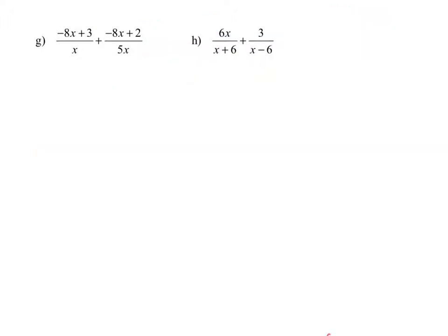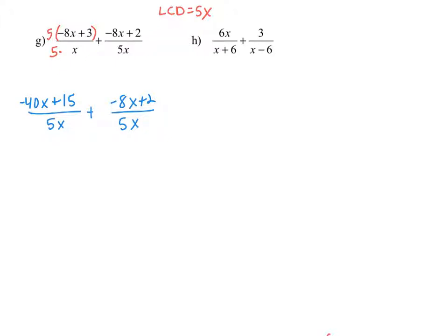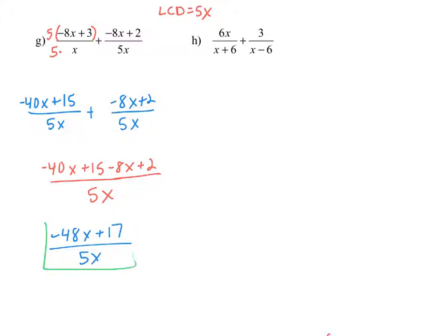To add the rational expression negative 8x plus 3 over x to negative 8x plus 2 over 5x, we begin by finding the LCD, which is 5x. The first fraction is missing a 5, so we multiply the numerator and denominator by 5. Distributing the 5 gives negative 40x plus 15 in the numerator. The second fraction already has the common denominator. Adding the numerators: negative 40x plus 15 plus negative 8x plus 2, and simplifying gives negative 48x plus 17 all divided by 5x.